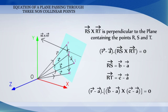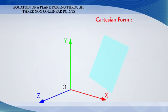Now, Cartesian form of the equation of the plane passing through three non-collinear points. Let (X1, Y1, Z1), (X2, Y2, Z2) and (X3, Y3, Z3) be the coordinates of the points R, S and T respectively.